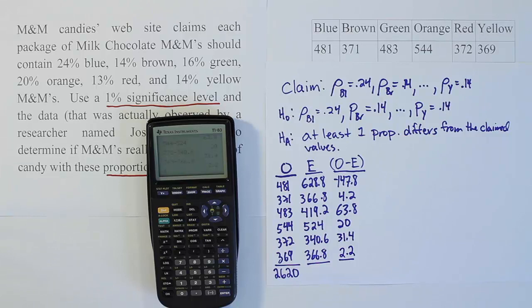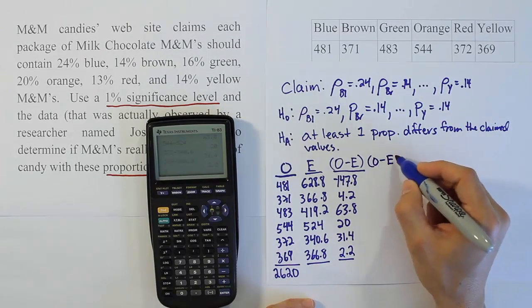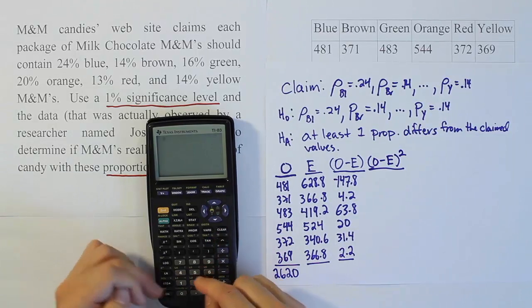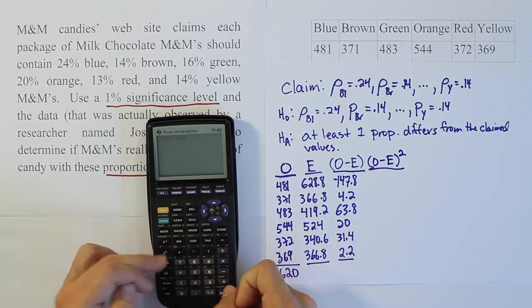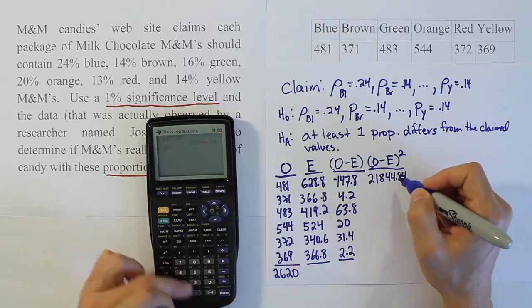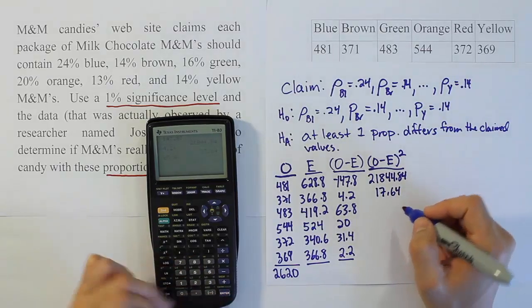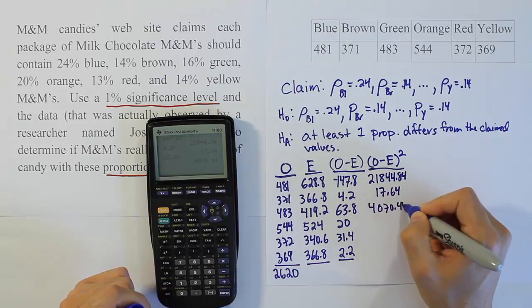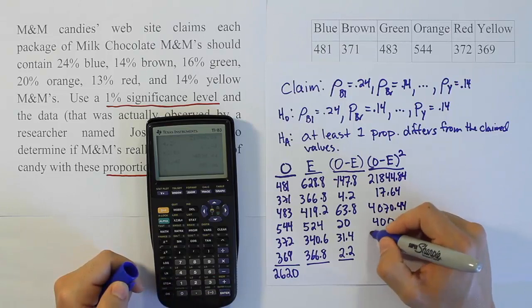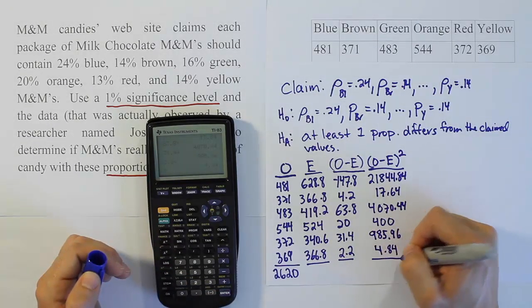Now the next step is to do observed minus expected squared. We're going to square every value in that column. 147.8 squared gives 21,844.84. 4.2 squared gives 17.64. 63.8 squared gives 4,070.44. 20 squared is 400. 31.4 squared gives 985.96. And 2.2 squared gives 4.84.